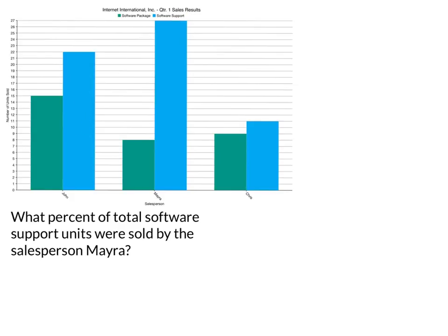You also want to look at the x-axis and the y-axis. On the x-axis, what's being shown is the salesperson — there's John, Myra, and Chris. On the y-axis, this is the number of units sold, giving you a range from 0 to 27, and all the bars fall within that range of units sold for packages or software support.